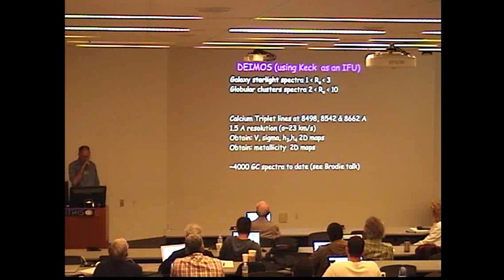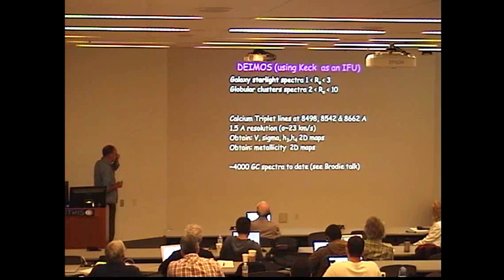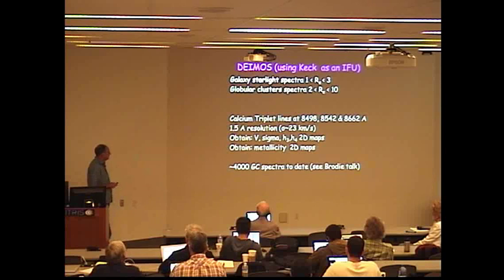As I said, we're looking at galaxy starlight out to about three effective radii, globular clusters out to about ten effective radii. We use the calcium triplet lines using Deimos in the near infrared, gives us very good resolution.